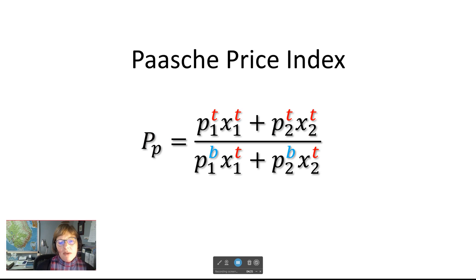Here is the general definition of the Paasche price index. We have Pp = (p1^t * x1^t + p2^t * x2^t) / (p1^b * x1^t + p2^b * x2^t). In the numerator we have the price of good one in time t times the amount of good one consumed x1 in time t, plus the price of good two in time t times the amount of x2 being consumed in time t. That is divided by the price of good one in the base period times the amount of good one being consumed at time t, plus the price of good two in the base period times the amount of good two being consumed in time t.